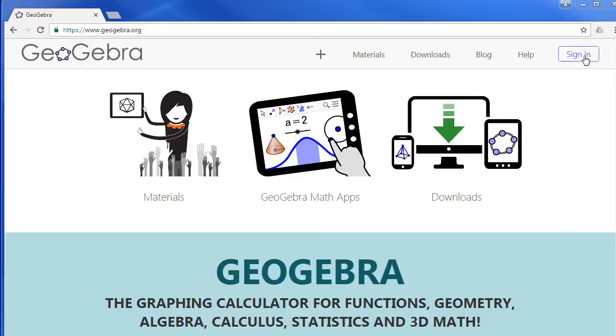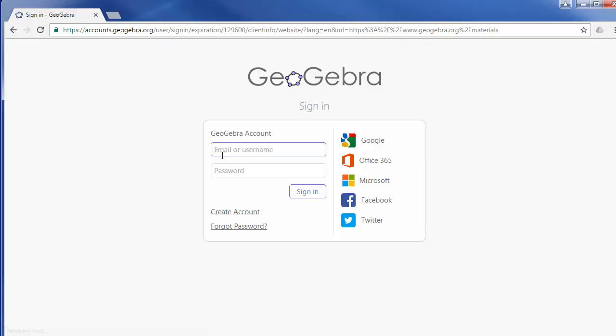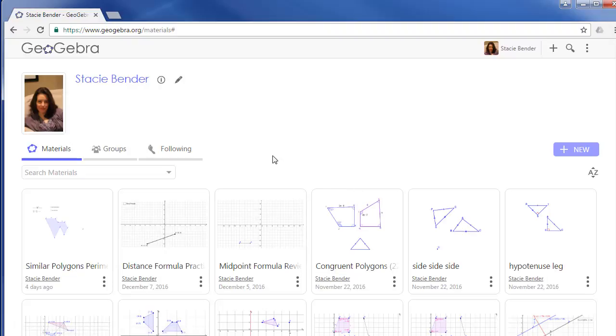Start by going to geogebra.org and sign in so that you can save the exploration when you're finished. There are a number of options for you to sign in. You can create an account or sign in with Google and so forth.